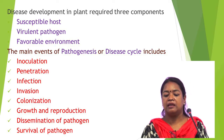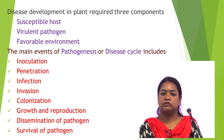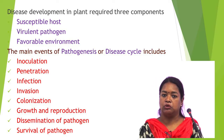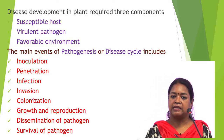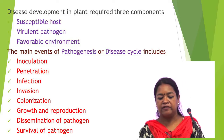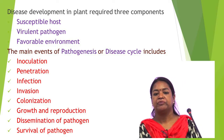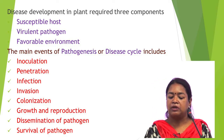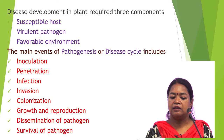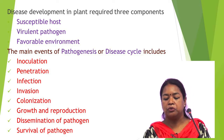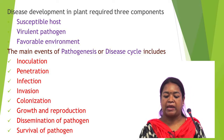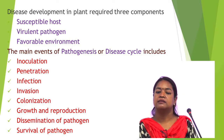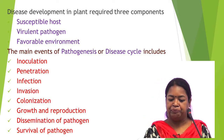The main events of pathogenesis or disease cycle include: the first event is inoculation, second is penetration, third is infection, fourth is invasion, fifth is colonization, sixth is growth and reproduction, and seventh is dissemination and survival of the pathogen.